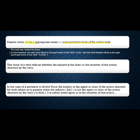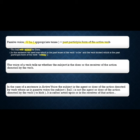For example, in 'The ball was kicked by Dora,' we used 'was,' which is the past tense of the verb 'to be.' The second verb used is 'kicked,' which is the past participle form of the verb 'kick.' So the pattern followed in passive voice is: to be form of the verb (according to tense) plus past participle form of the active verb. The voice of a verb tells us whether the subject is the doer or the receiver of the action.